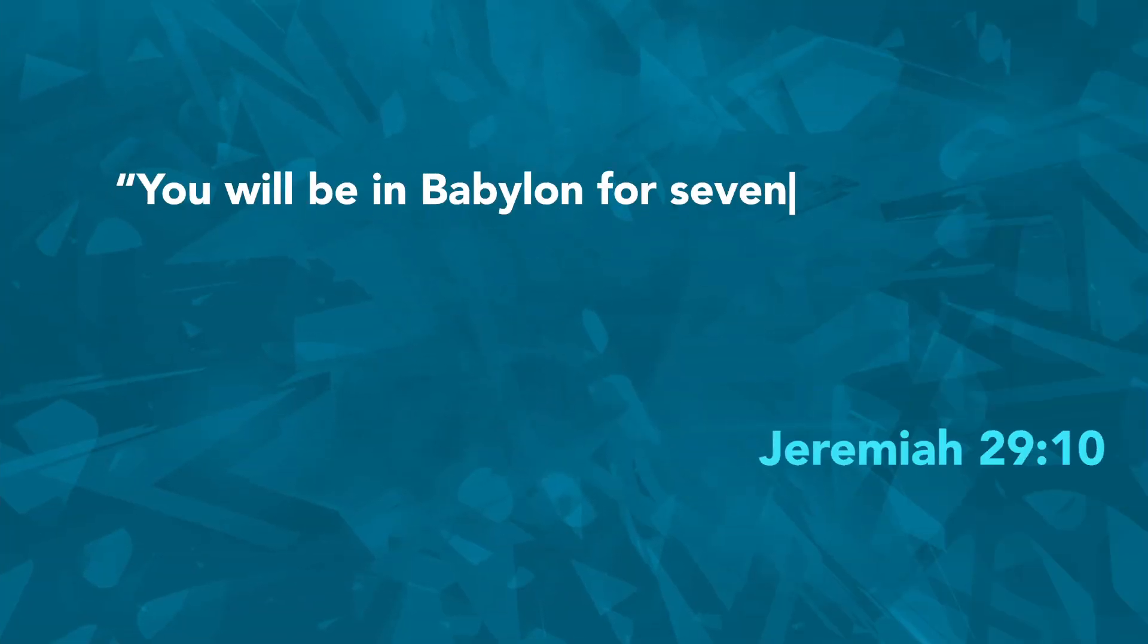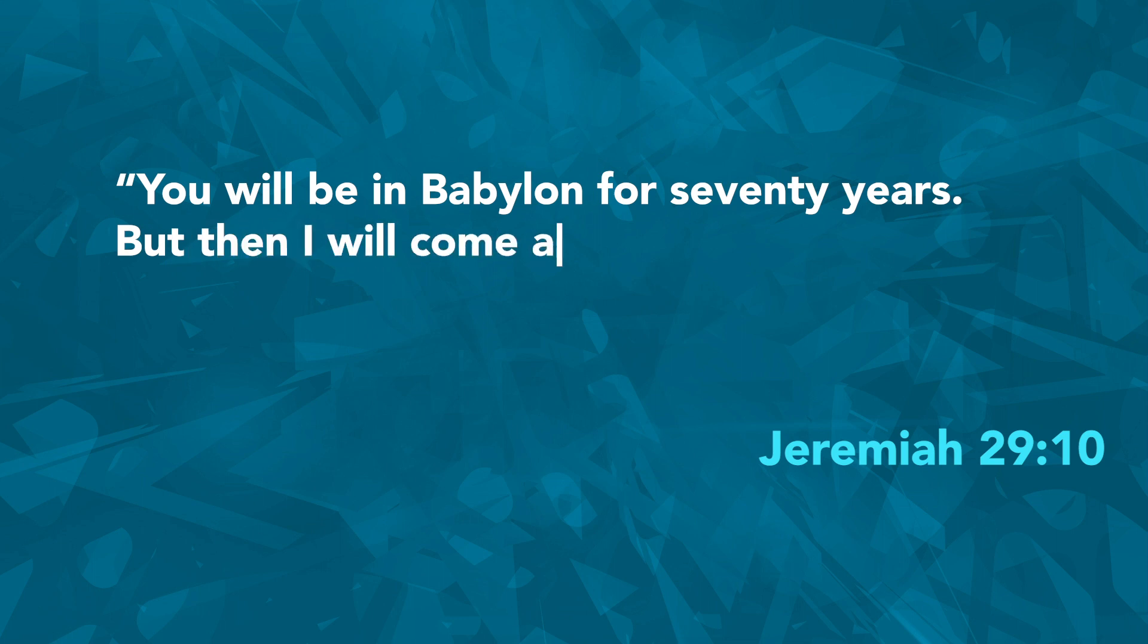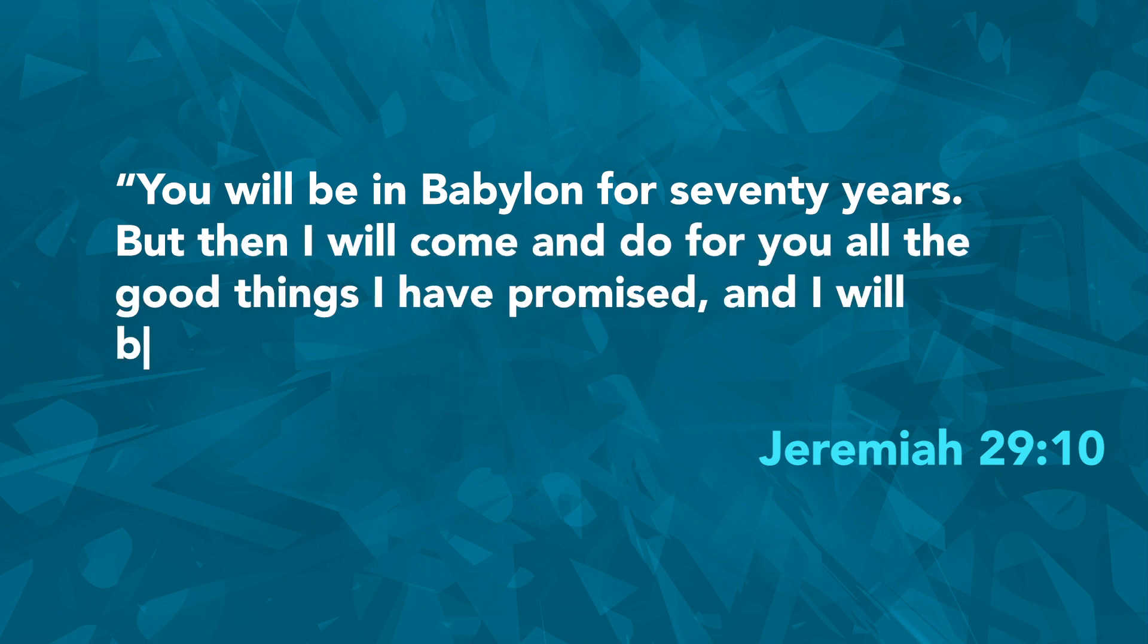God even told the prophet Jeremiah exactly how long the people would be in exile before they could return home. Listen to this: 'You will be in Babylon for 70 years, but then I will come and do for you all the good things I have promised, and I will bring you home again.' Even through really hard times like the exile era, we can see how the Bible is a bunch of smaller stories that point to one big true story, the story of God and his rescue plan through Jesus.